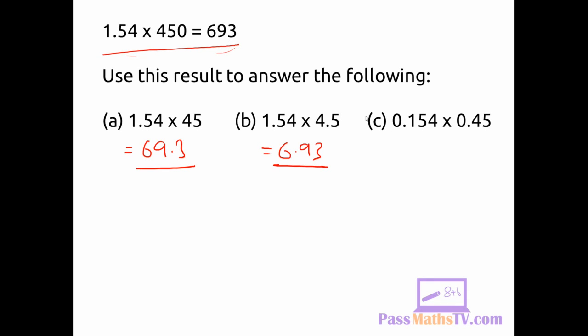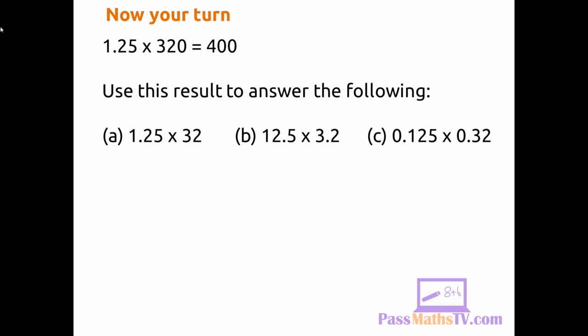So if you do 693 divided by 10,000, leave the decimal point exactly where it is. We're left with 0.0693, and you can see that the decimal place stays exactly where it is, but the digits 693 has moved four places to the right. Now your turn, try these questions. Solutions will appear very shortly.